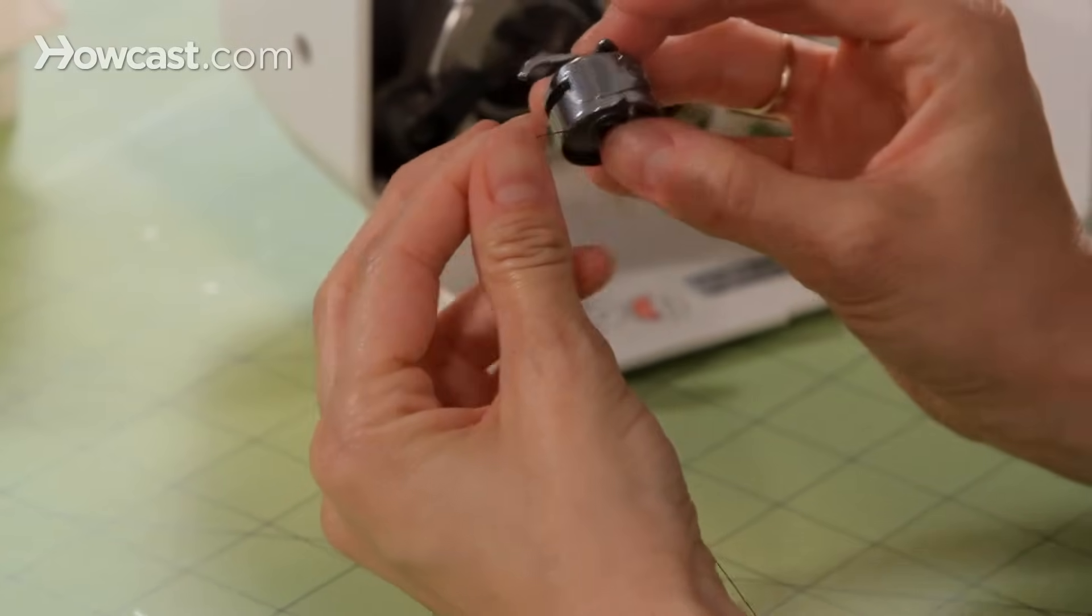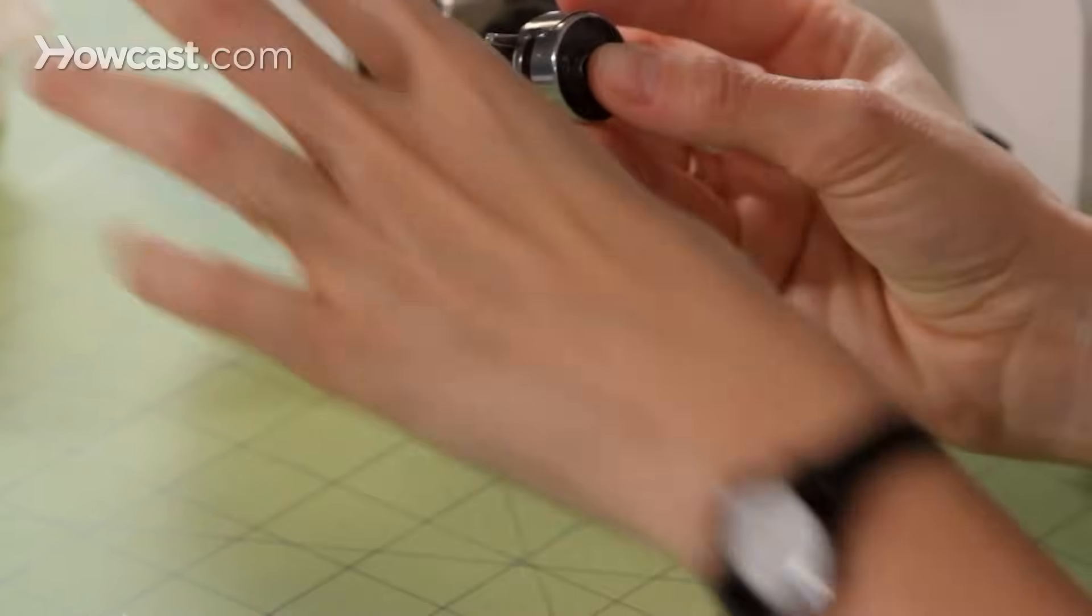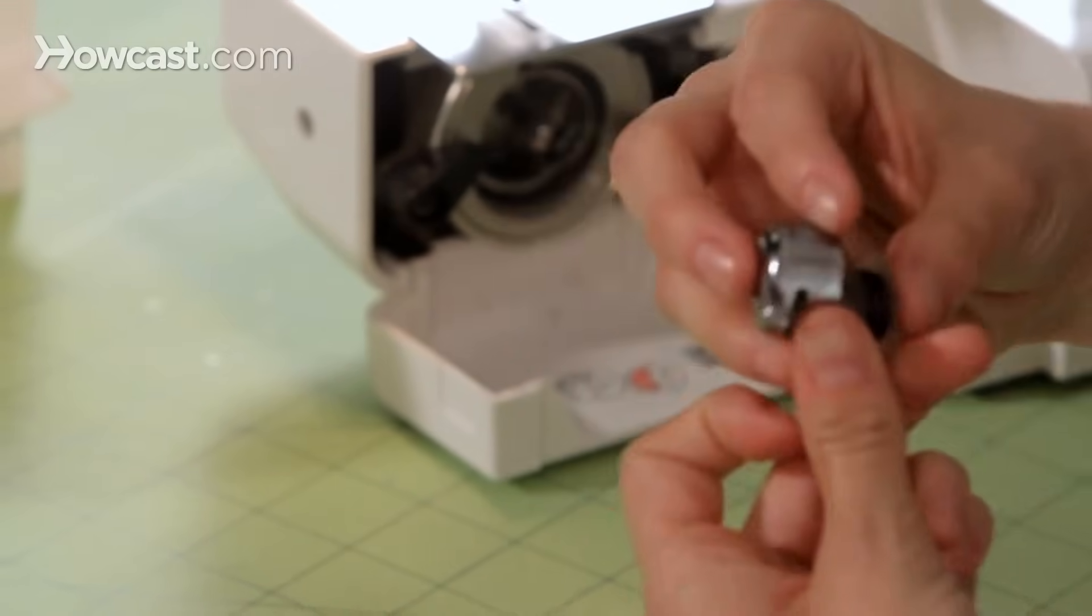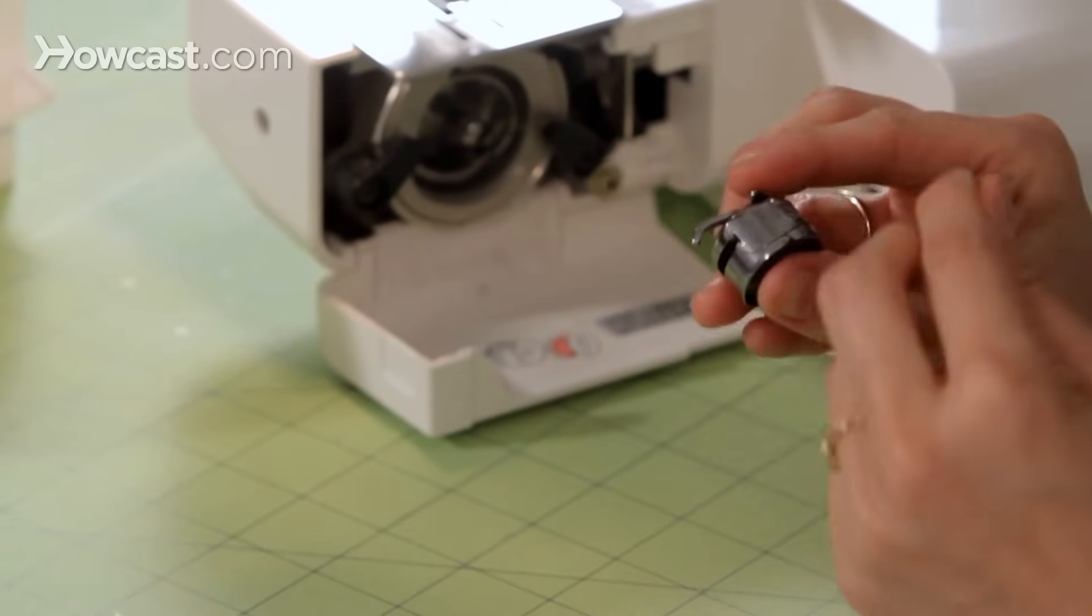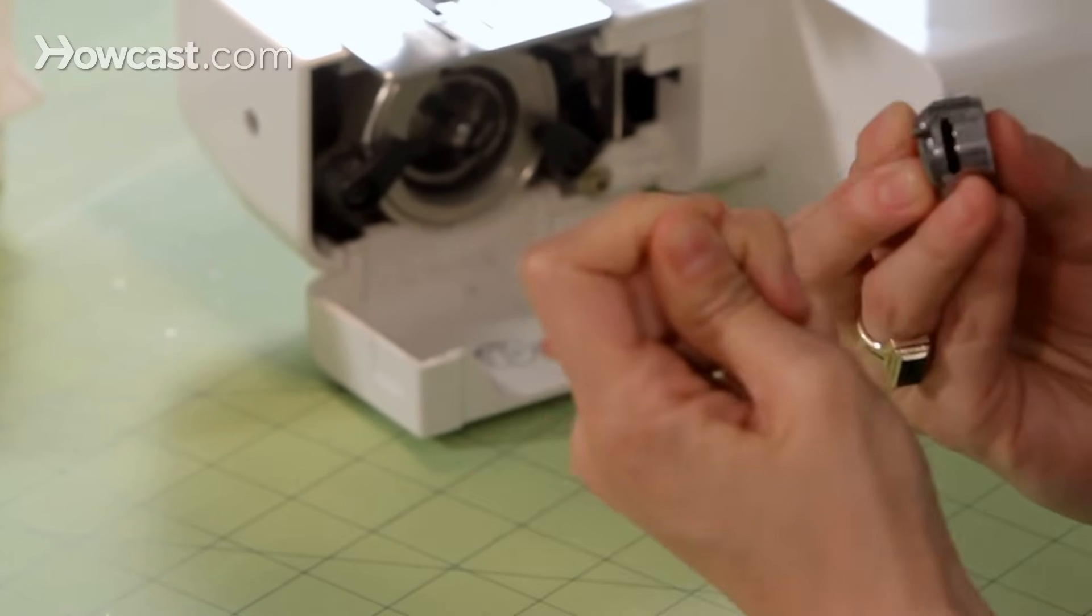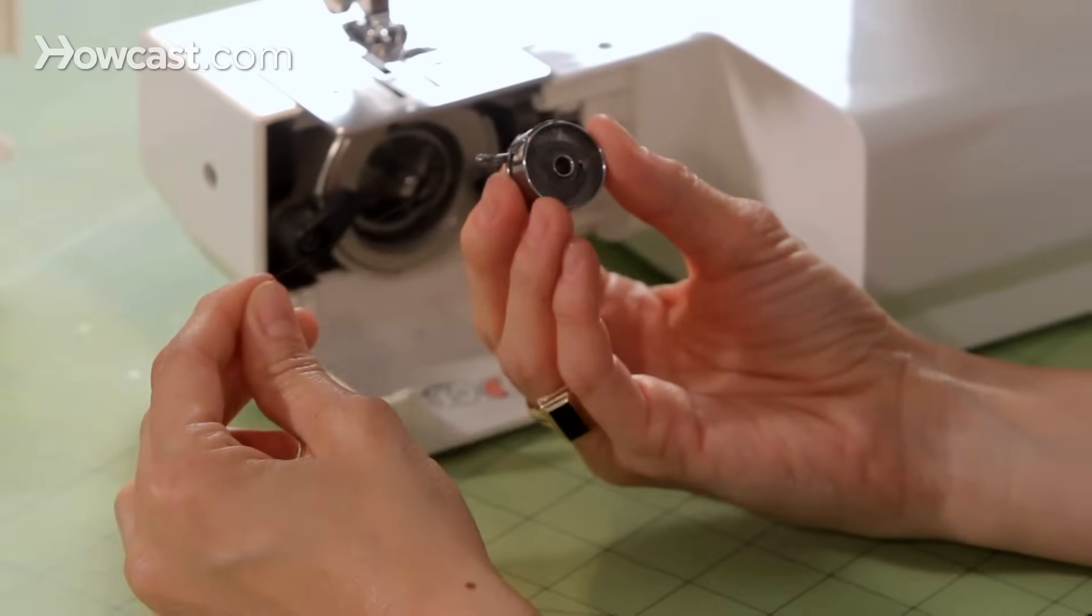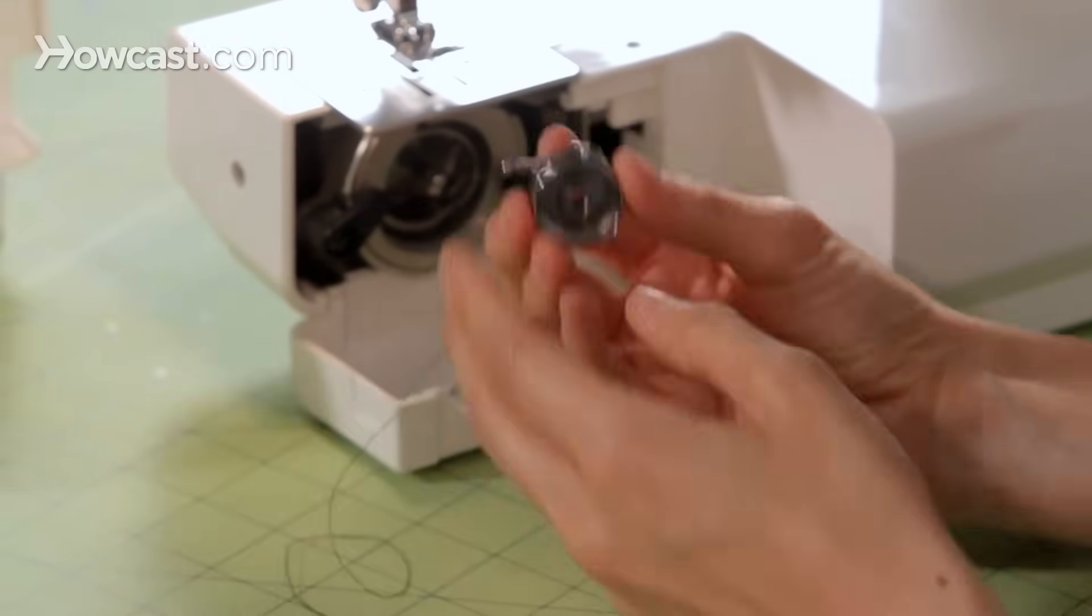If you put your bobbin in going to the right so that the thread is going the other way, like this, then things are not able to move as easily. That could be something that's causing your bobbin problems.